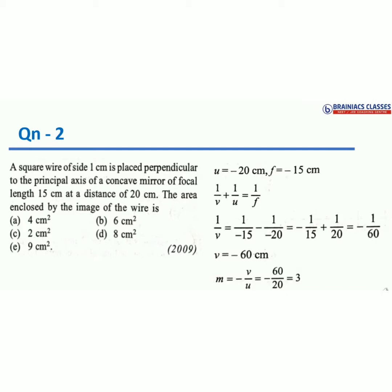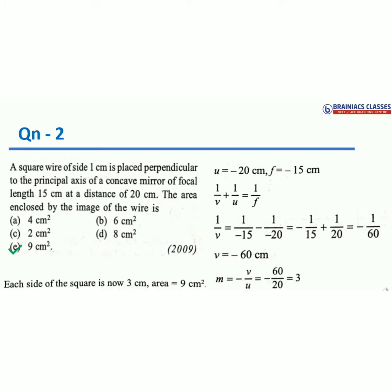Magnification is 3 and object size is 1 centimeter per side. So the corresponding image side length is 3 × 1 = 3 centimeters. Since the object is a square, the area of the image is 3 × 3 = 9 square centimeters. Option E is the correct answer.